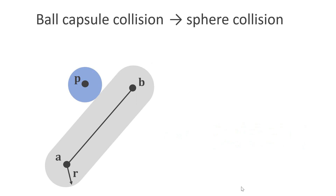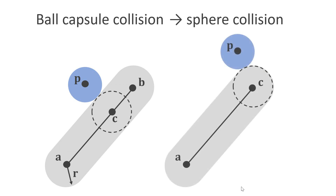We can now use this operation to handle the collision between a ball and a capsule shape. A capsule shape is defined by a segment AB and the radius R — we are going to model the flipper with this shape. To handle the collision, we first compute the closest point C on the axis of the capsule, then replace the capsule by a ball centered at C with radius R and handle the collision between the two balls as in the last tutorial. This works nicely even at the rounded ends.